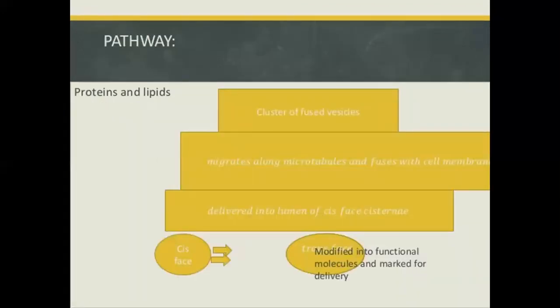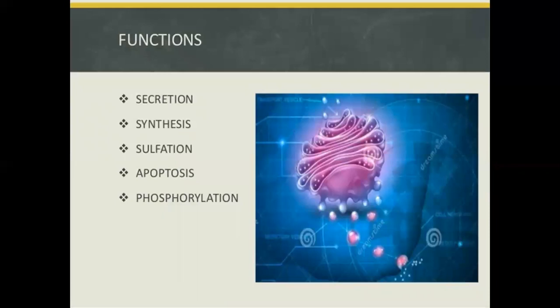The pathway for proteins and lipids involves a cluster of fused vesicles that migrate along microtubules and fuse with the cell membrane, delivering content into the lumen of the cis-space cisternae. The material goes towards the trans-space, where it is modified into a functional molecule and marked for delivery. Functions of the Golgi include secretion, synthesis, sulphation, apoptosis and phosphorylation.